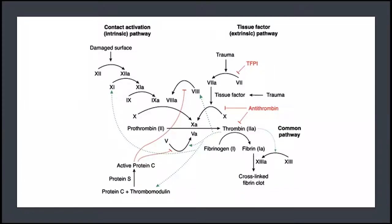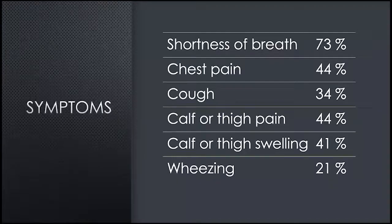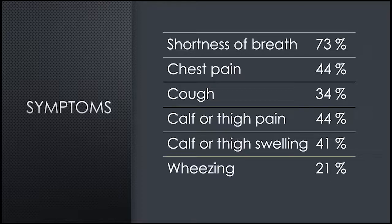So just a reminder of our clotting cascade — it may bring back bad memories. Symptoms: the most common symptom is dyspnea, followed by chest pain, cough, thigh pain or swelling, and wheezing. Cough and wheezing don't necessarily come to mind as readily as some of the other symptoms, but it's good to keep an open mind when evaluating these patients.